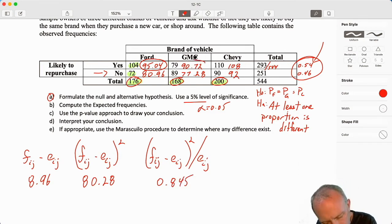Now I'm going to move on to this one here. So that's 79 minus 90.72. This is 11.72. I'm going to square that. 137.36. And I'm going to divide by 90.72. And that gives me 1.514.